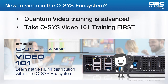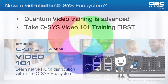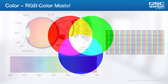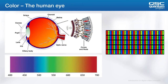Let's get started with a discussion on video color. RGB — red, green, and blue — is the most commonly used color model today because it most closely models the human eye, and it also best represents the actual pixel data on video display devices. The human eye contains rods that detect light intensity and cones that perceive color.